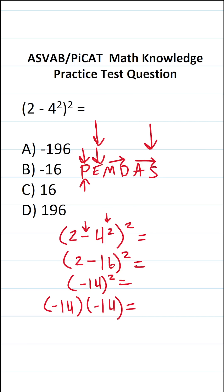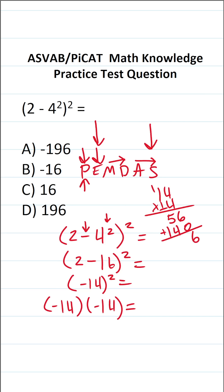All we have to do is negative 14 times negative 14, which is the same thing as 14 times 14. I'm going to work this off to the side so as not to make a mistake. 4 times 4 is 16 — carry a 1. 4 times 1 is 4, plus 1 is 5. Before we start multiplication with this 1, we bring in a 0 placeholder. 1 times 4 is 4, and 1 times 1 is 1. Adding it all up: 6, then 5 and 4 is 9, then 1. So negative 14 times negative 14 is 196.